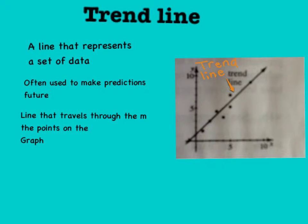Trend line is a line that represents a set of data, often used to make predictions about the future. It is also a line that travels through the majority of the points on the graph.